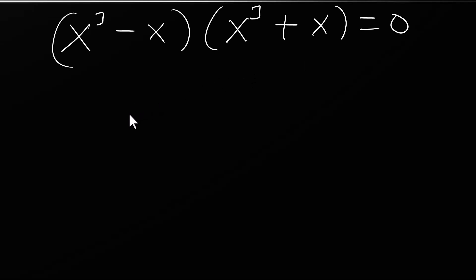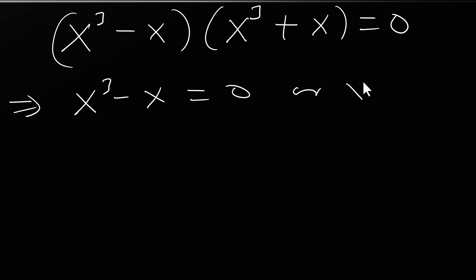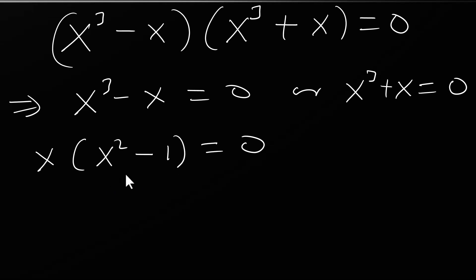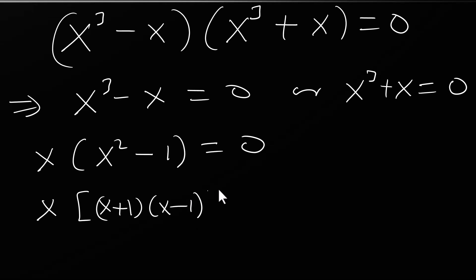Let's observe the zero product here. We have x cubed minus x equals zero. We can factorize by taking x out, which gives x(x squared minus 1) equals zero. Remember we can still write x squared minus 1 as a difference of two squares, so x squared minus 1 is the same as (x plus 1)(x minus 1). So we have x(x plus 1)(x minus 1) equals zero.